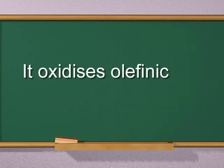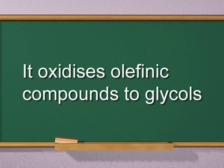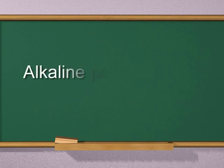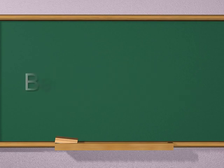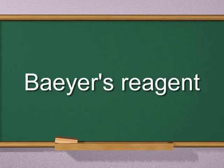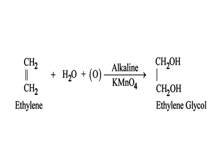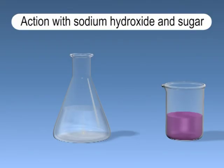For example, potassium permanganate oxidizes olefinic compounds to glycols. Alkaline potassium permanganate (KMnO₄) used for this test is also known as Baeyer's reagent. Ethylene is oxidized with alkaline KMnO₄ to form ethylene glycol.